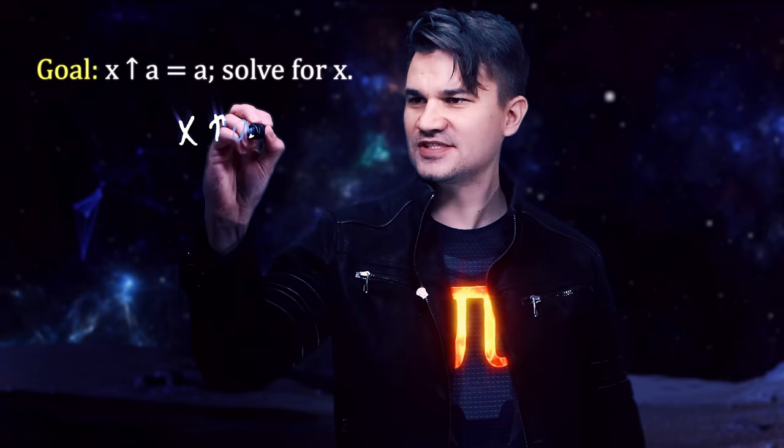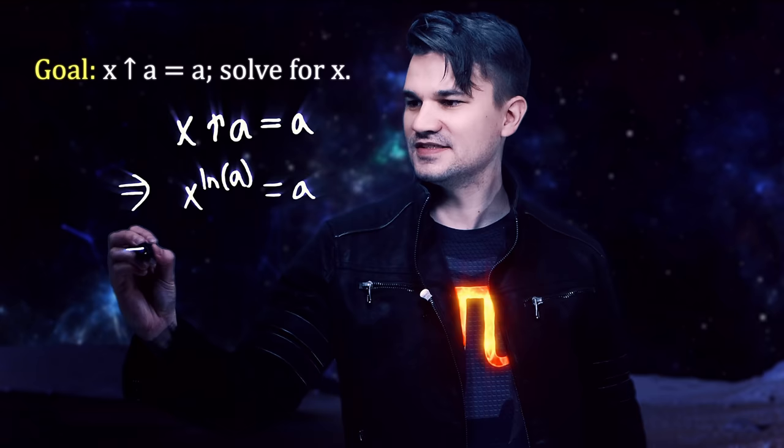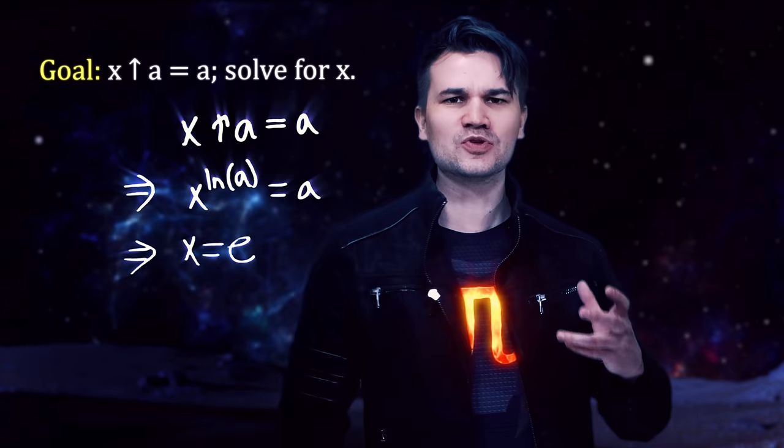If we take x power log A and we set this equal to A, what does that say about x? Well, this means that x to the natural log of A is A. Well, that just means that x is E. So the identity of power log is E, or presumably whatever base you choose when defining the operation.